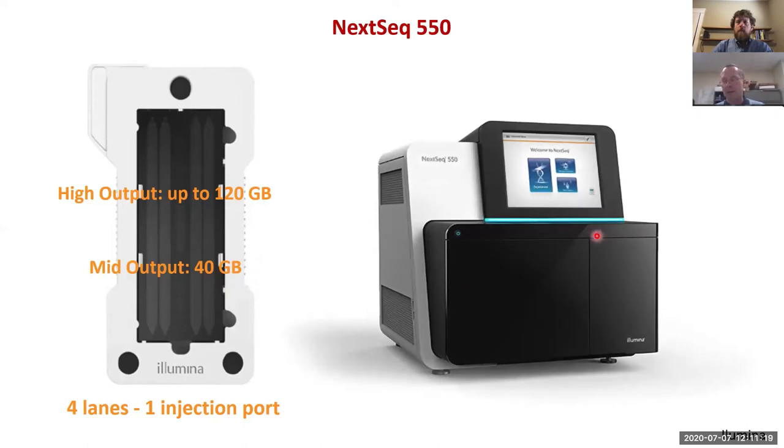This is how the sequencer looks. The flow cell is inserted here, there's a buffer chamber here, and a reagent cartridge here. This is a touch screen which runs the sequencer. Once it's started, it's running automatically. The data gets pumped to the Illumina cloud and from there it can be made available to the end user and enable sharing.